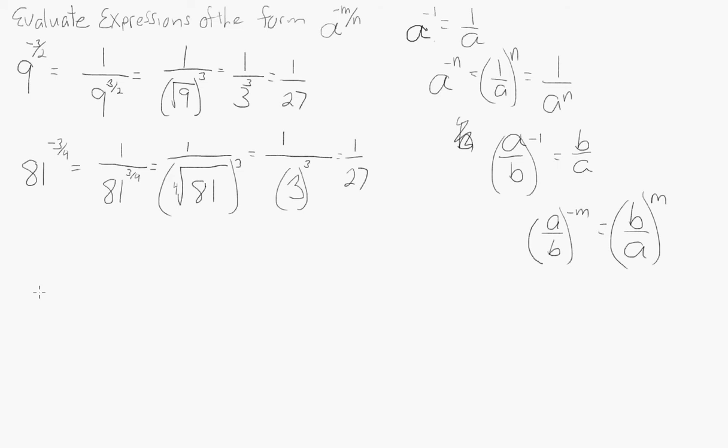8 over 27 raised to the negative 4 thirds. This will be 27 over 8 to the positive 4 thirds.